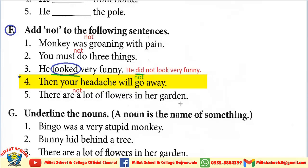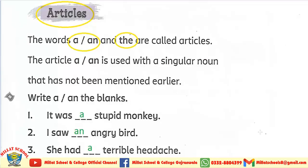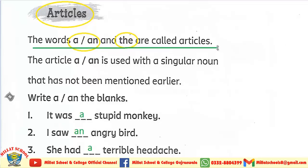Now quickly open workbook page number 19. On page number 19, today we have to do articles. You know what articles are — articles are three different words which we use with different sorts of sentences or words. The words 'a', 'an', and 'the' are called articles. The article 'a' and 'an' is used with singular nouns that haven't been mentioned earlier.